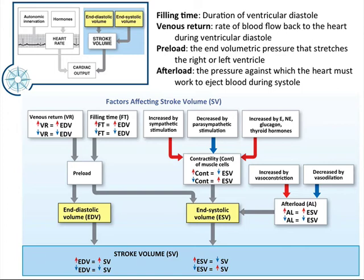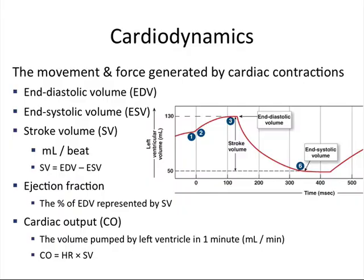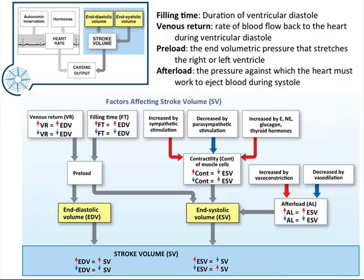The preload is how much pressure of blood is in the ventricle before it begins its contraction — at the end of diastole, what is the pressure of blood that has been pushed into that ventricle. The afterload is the pressure against which the heart has to work to eject blood — the pressure the ventricle has to work against to open up those aortic valves. The lower this is, the more blood is going to be able to be ejected.